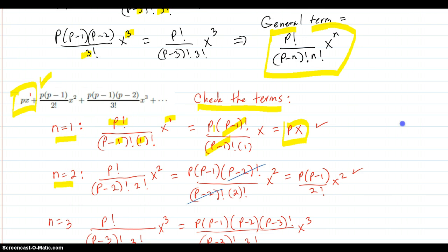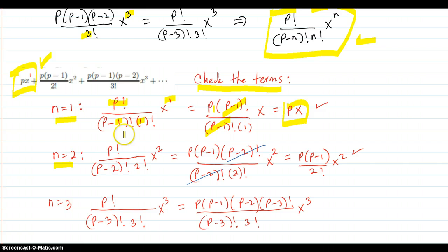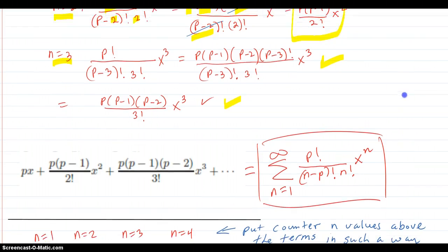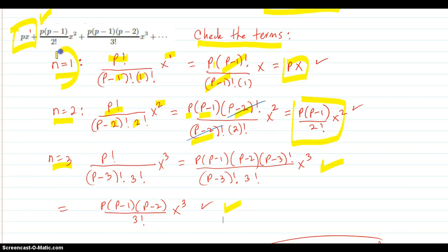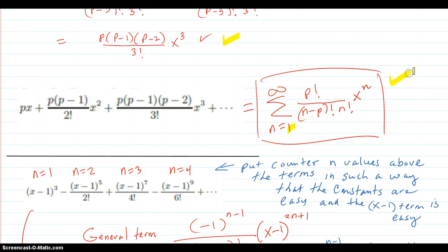Then we go on to n equals 2. Put in n equals 2 into the formula. You get p-2 over 2 factorial squared. Using the same kind of mechanism, burn off a couple of terms in your p factorial — end it at p-2 factorial all the way down to 1. These cancel out, and you get this, which checks out. So writing as summation notation, n starts at 1, so we write 1 to infinity of this. The series is rewritten like this.